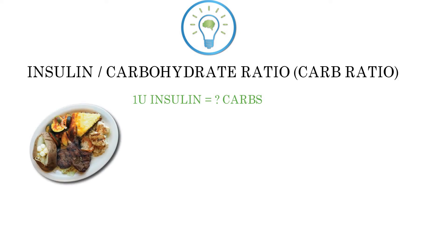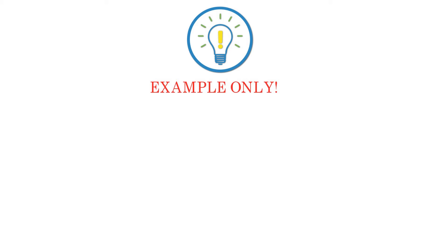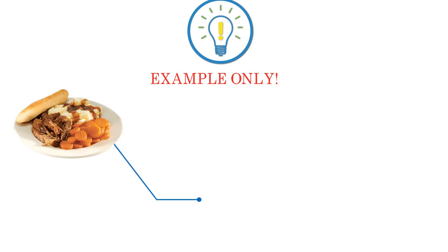Carb counting will be discussed in a later section. The insulin to carbohydrate ratio is given to you by your doctor. This example is used for demonstration purposes only and your personal ratio should be used in your calculations. Your unique carb ratio is divided into the amount of carbohydrates that are about to be eaten.